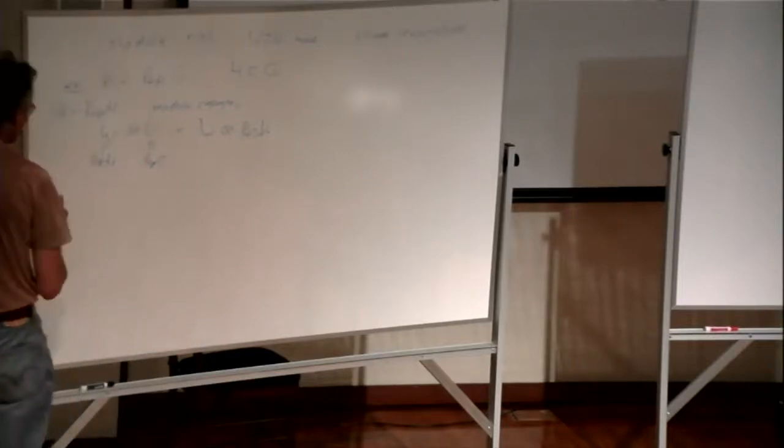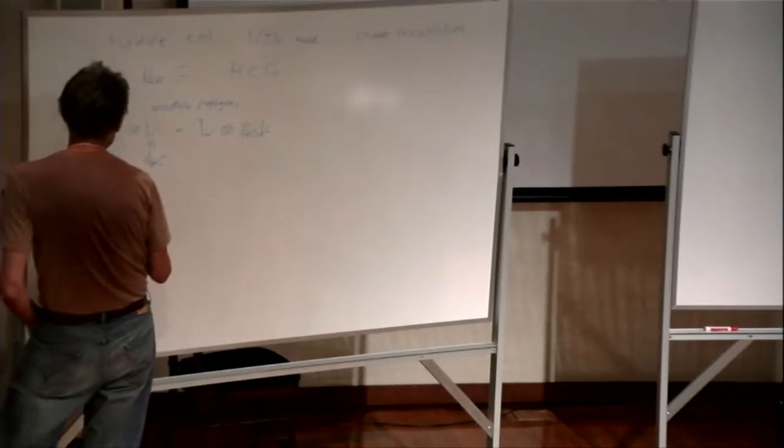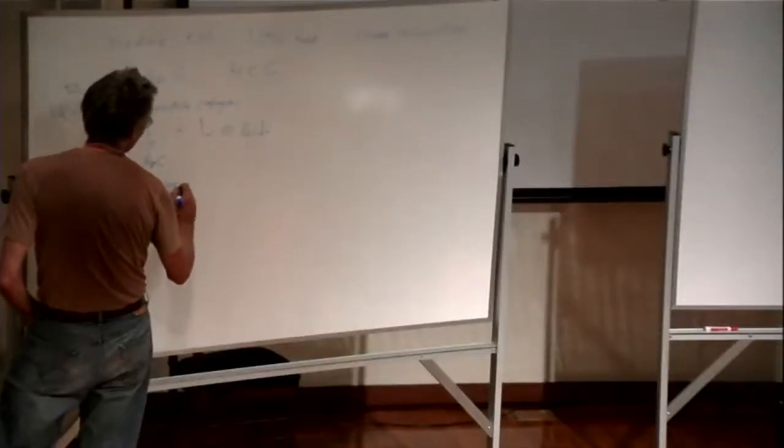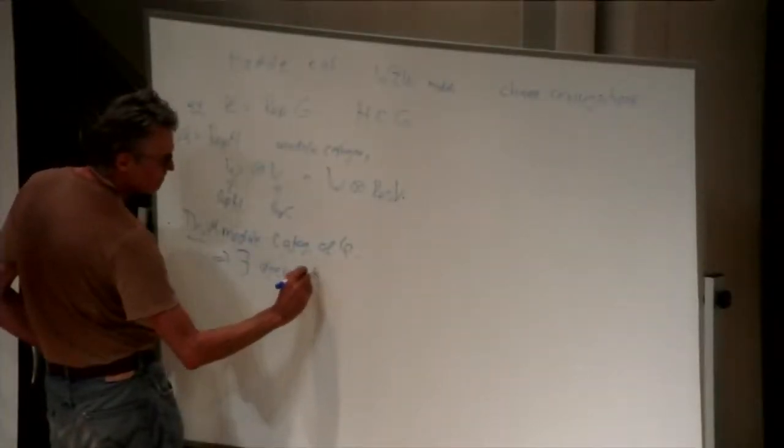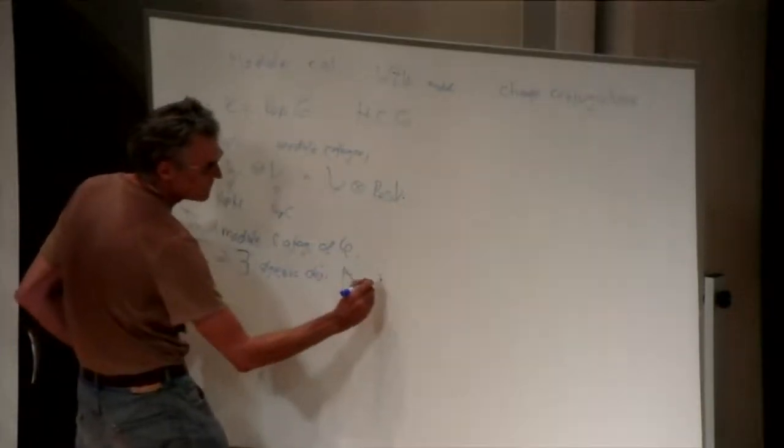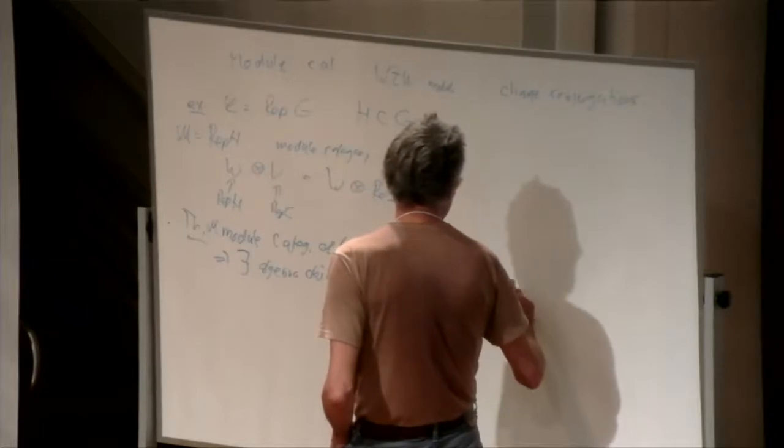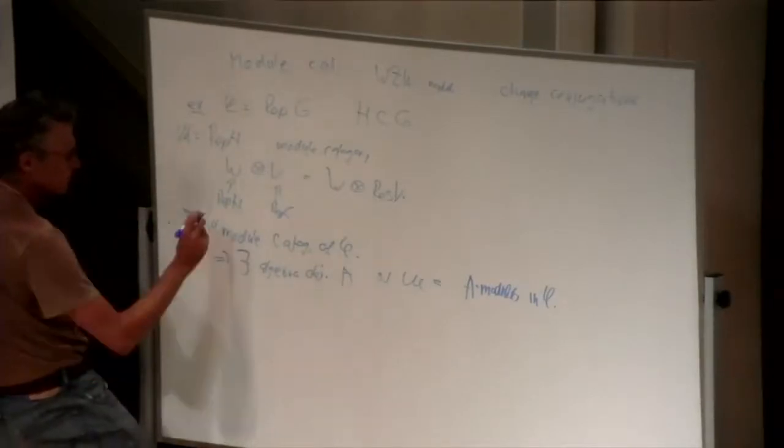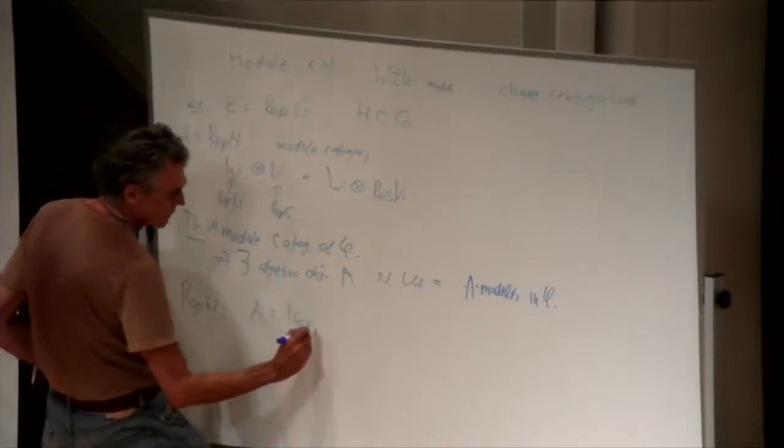Another thing I want to say is that's a theorem by Ostrich, which says that module categories can be characterized by algebra objects. A category of C and an existing algebra object A such that M is the A modules in C.